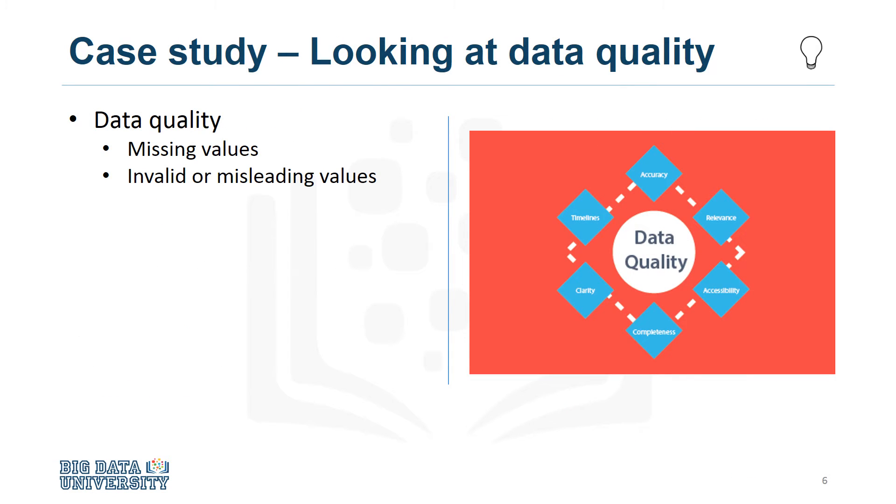The univariate statistics and histograms are also used to assess data quality. From the information provided, certain values can be recoded, or perhaps even dropped if necessary, such as when a certain variable has missing values.